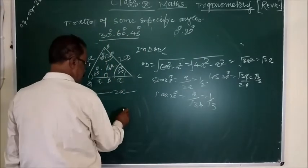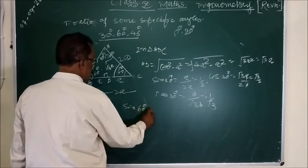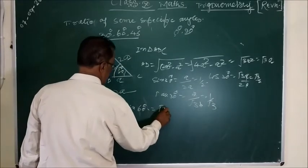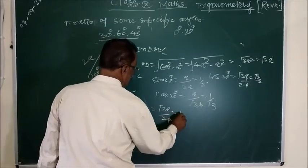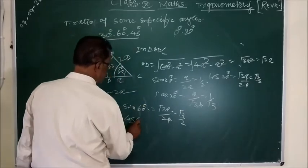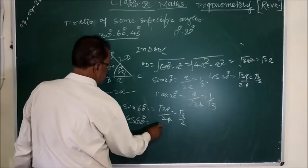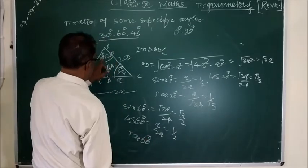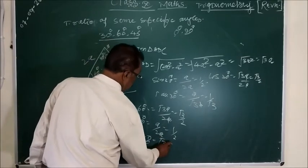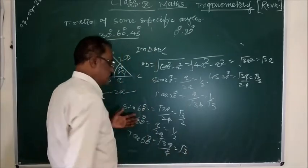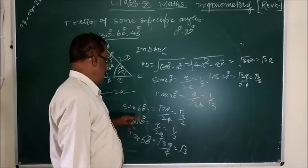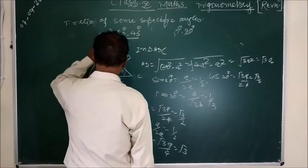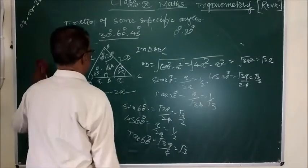Now for 60 degrees: sin 60 degrees — for this angle, the perpendicular will be root 3A and the hypotenuse will be 2A. So root 3A upon 2A gives root 3 by 2. Similarly, cos 60: for this angle, the base will be A. So A by 2A gives 1 by 2. And tan 60: perpendicular by base is root 3A by A, so this will be root 3. And the other three ratios — cosec, sec, and cot — are the reciprocals of sin, cos, and tan. This is the method by which we can find the values of 30, 60, and 45 degrees.